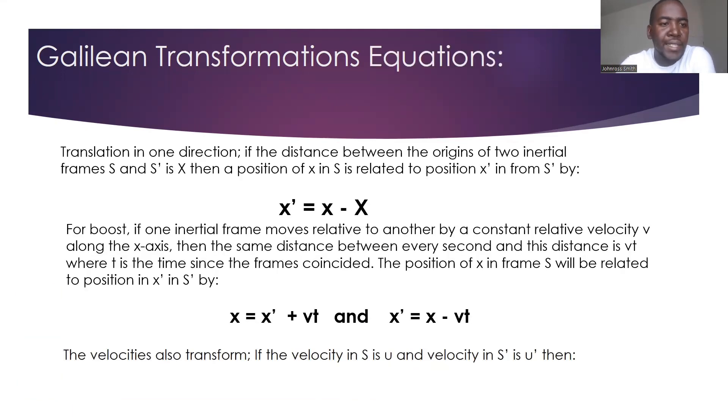Now, translation is one direction. So if the distance between the origin of two inertial reference frames, S and S prime is X, and what that means if we look at two different reference frames, the position between them, we can call it X.